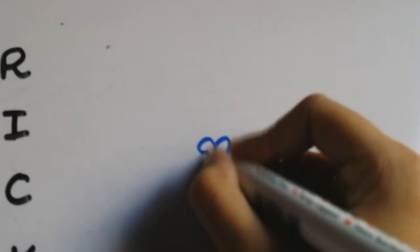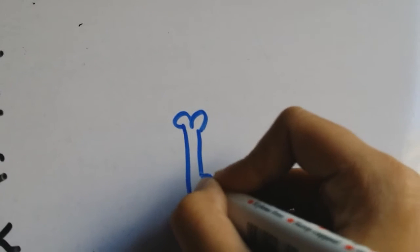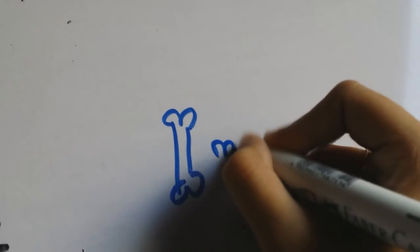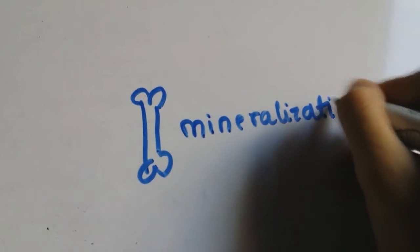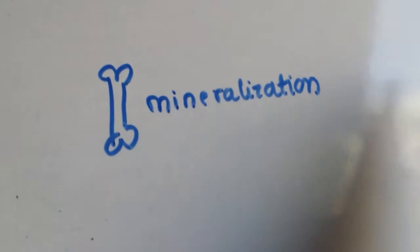In this video I'm going to be talking about Rickets. Rickets is a disease of long bones. Basically there's a failure of mineralization of the normal bones which makes them very soft and leads to a lot of deformities.